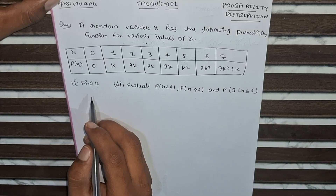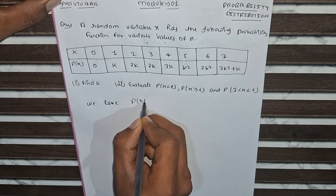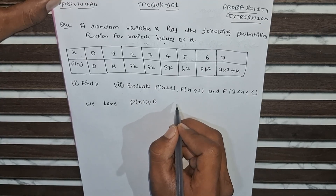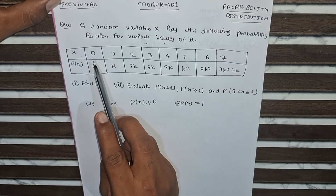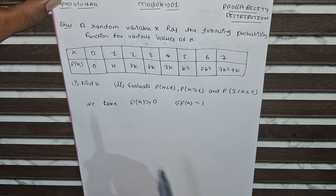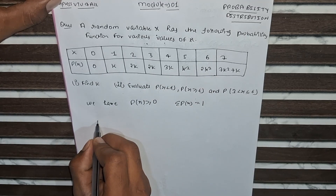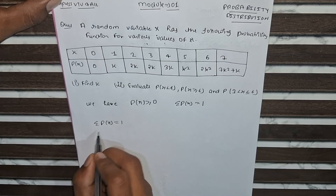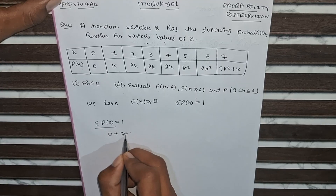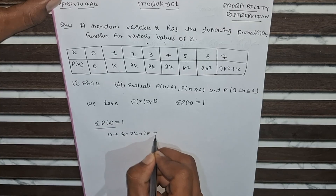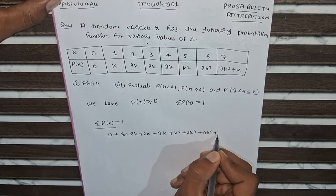Now we go for the first part: find k. As we know, P(X) ≥ 0 and the summation of P(X) = 1. Applying this condition, the sum of all given probability functions is: 0 + k + 2k + 2k + 3k + k² + 2k² + 7k² + k, which equals 1.